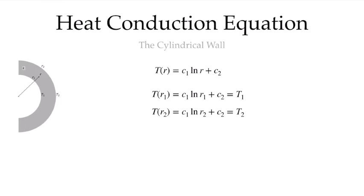To solve for c1, we'll write that the temperature at r1 equals T1, and the temperature at r2 equals T2. If we subtract these two, we'll eliminate c2 and solve immediately for c1. That gives us c1 = (T1 - T2) / ln(r1/r2).